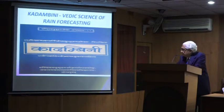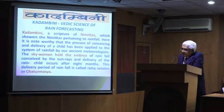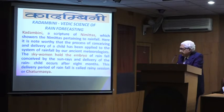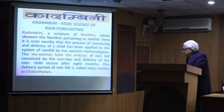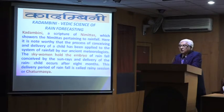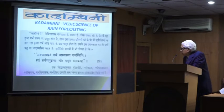This is the science I am going to present. Kadambani — the Vedic science of rainfall forecasting — written by Pandit Madhusudhan Oja. Kadambani is a scripture of Nimittas. What are those Nimittas? How do they pertain to rainfall? They say: the sky woman holds the embryo, and rainfall is conceived by the sun rays. Delivery of the rain child occurs after eight months. This delivery period of rainfall is called Chatur Maas — four months it rains.